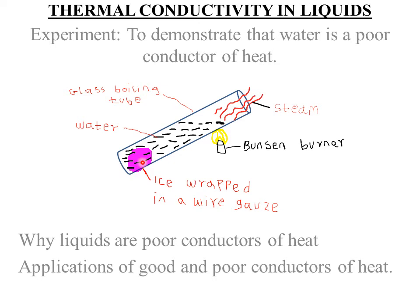A student should also note that the wire gauze is a good conductor of heat, and yet the ice remains unmelted at the bottom. This shows there is very little heat conduction in water, which confirms water is a poor conductor of heat. Water is heated at the top of the glass tube to eliminate the possibility of heat reaching the ice by convection, since heating at the bottom could transfer heat upwards through convectional currents.